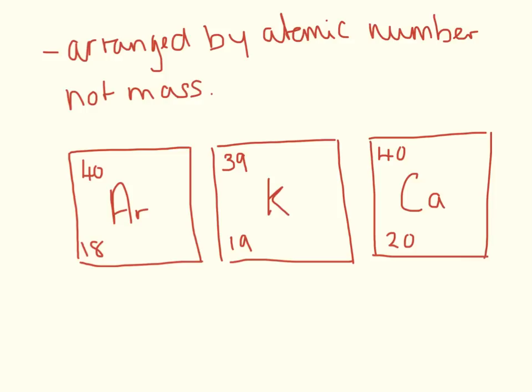This leads us to have this little sequence with argon, potassium, and calcium, where the atomic mass goes 40, 39, 40. So it seems, if you go by Mendeleev's periodic table, that they're in the wrong order, but if you order them by atomic number, they're in the right order.